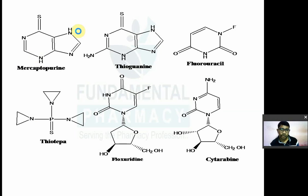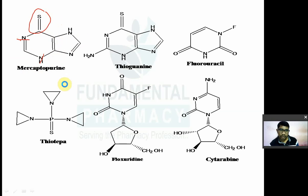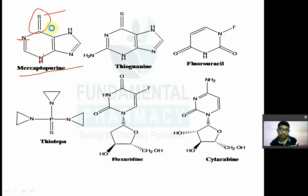You can see the structure of 6-mercaptopurine — it is a purine ring with numbered positions 1 through 9, with three nitrogen atoms. Thioguanine is also a 6-mercaptopurine analogue but has an additional amino group at position 2.